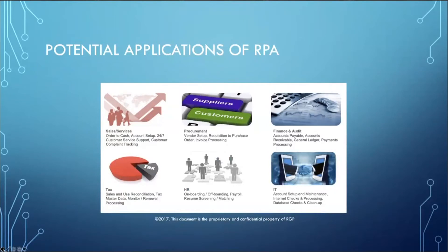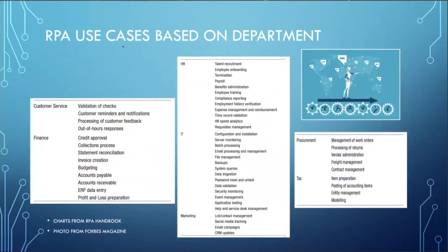The next slide shows us the applications of RPA in different departments, such as sales and services, procurement, finance and audit, tax, human resources, and information technology. There is a detail of functions that could be processed through these different departmental applications, allowing a company to eventually integrate their systems.